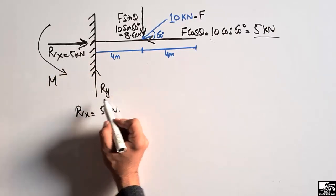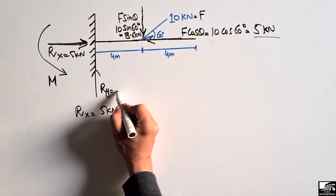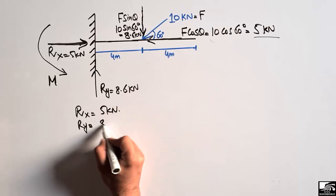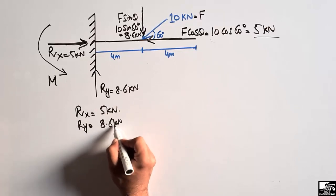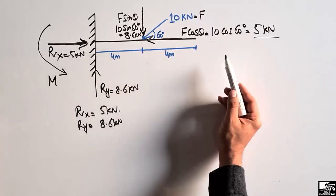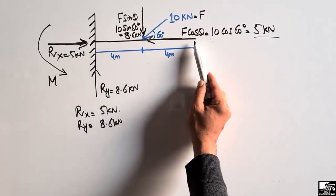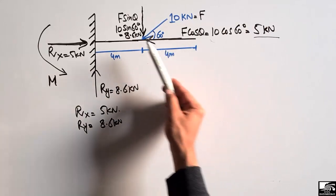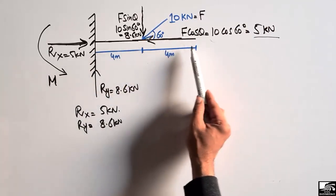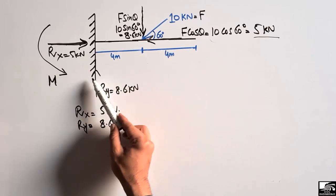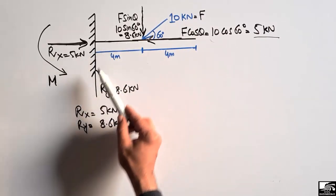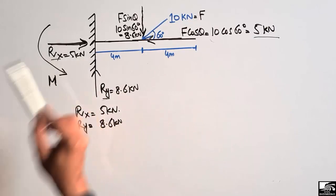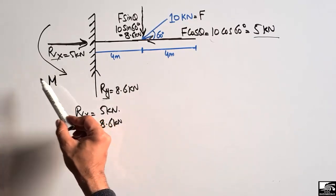Similarly, Ry will be equal to 8.6 kilonewtons, because there is no other support to take this vertical load. If there were another support, we could distribute or take the summation of moments to find the load. But since there is only one support, the whole vertical load is taken by Ry and the whole horizontal load by Rx.